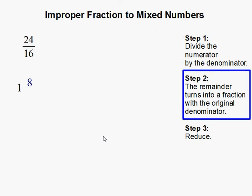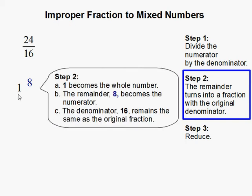Step 2. The remainder turns into a fraction with the original denominator. 1 becomes our whole number, then the remainder 8 becomes the numerator. The denominator, 16, remains the same as the original fraction.